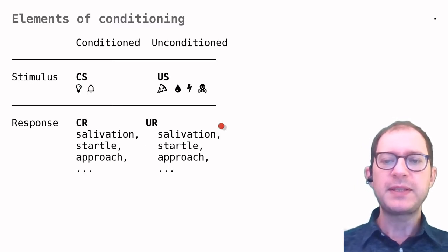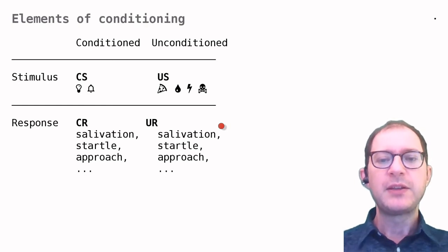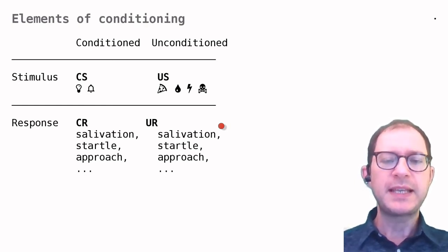Finally, the response that the animal learns is called the conditioned response, or CR. This was salivation in Pavlov's experiment, but we will see many other examples. So, a Pavlovian conditioning experiment can be summarized by saying that a CS is presented before a US, and, as a consequence, a CR is learned.